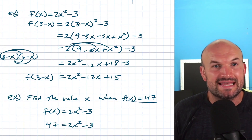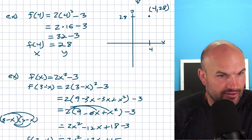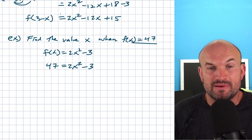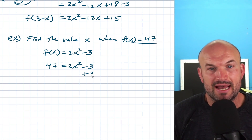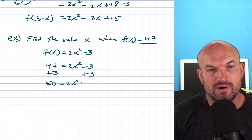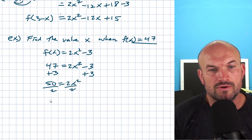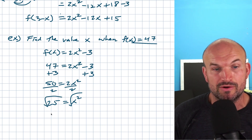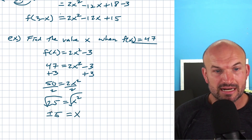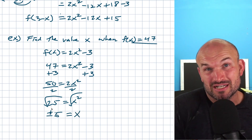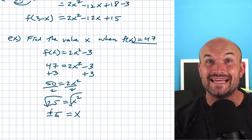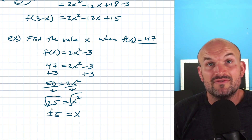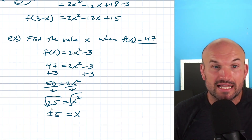We're trying to find the input value, so we use inverse operations to solve. Add 3 to both sides: 50 equals 2x squared. Divide both sides by 2: 25 equals x squared. Taking the square root of both sides gives plus or minus 5 equals x. You might say there are two answers, but remember this represents the input. As long as our input produces a unique output, we have a function. Two different inputs can provide the same output, and that's perfectly fine.